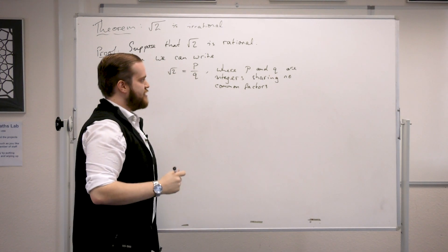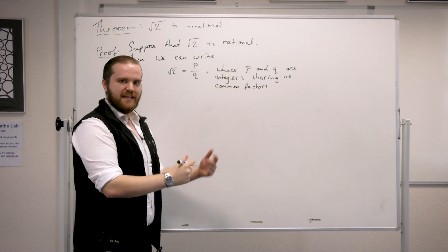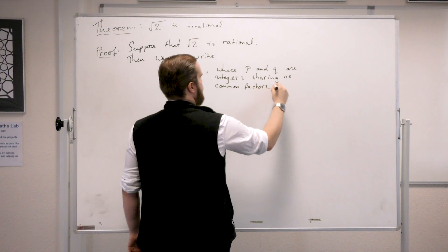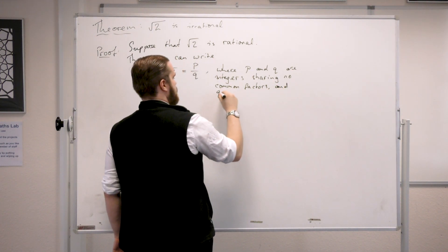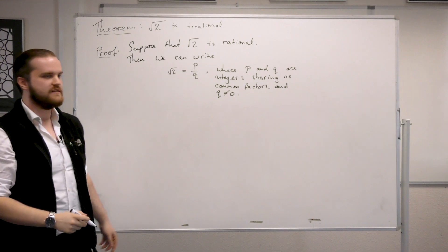Because if they shared common factors then you could cancel those. And q is non-zero because you can't divide by zero.